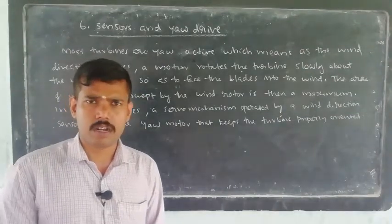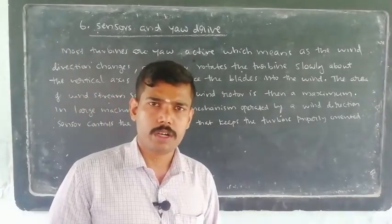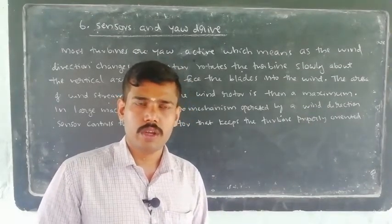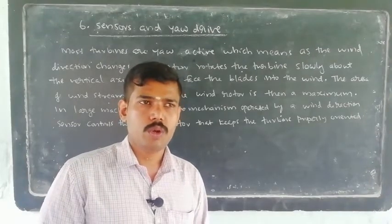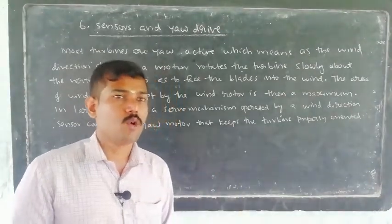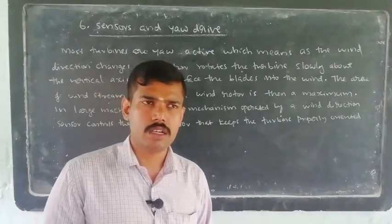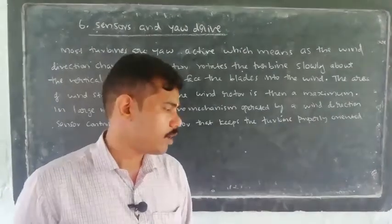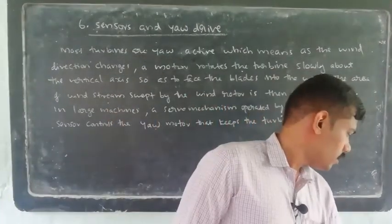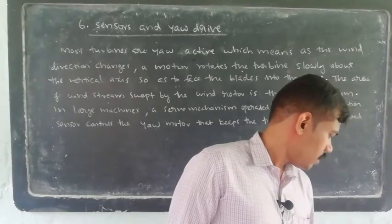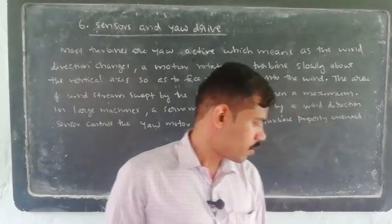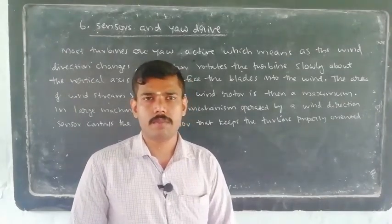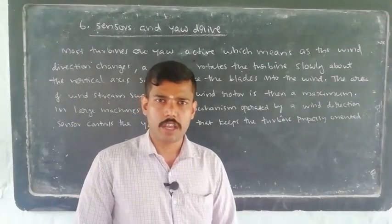So we now have the following components: tower and rotor, low and high speed shaft, gearbox, generator, yaw drive and sensors — those are the components covered so far. We will learn about 10 components total, including controls, power regulation and controlling units, and safety systems. That's what we will discuss in the next class. These are the 6 components. Thank you.